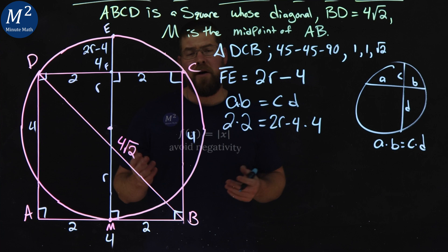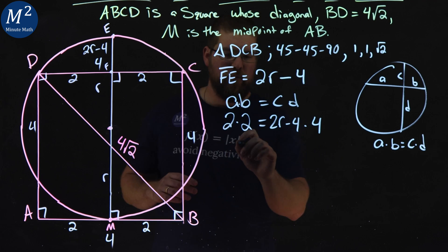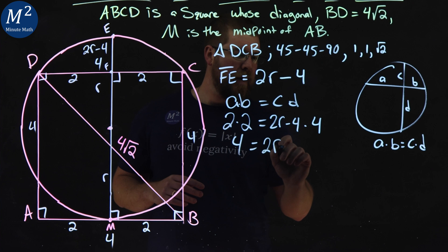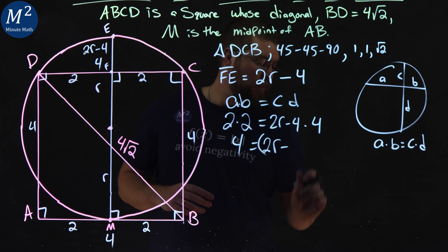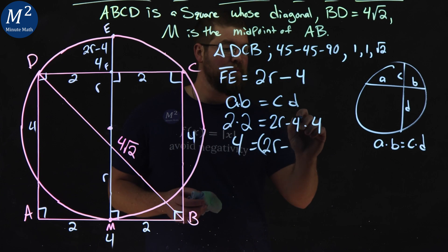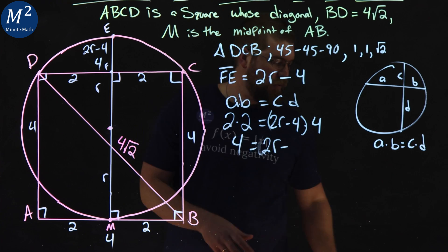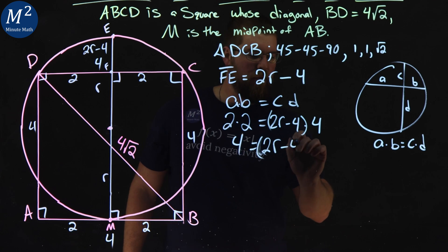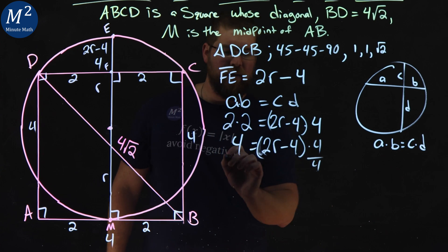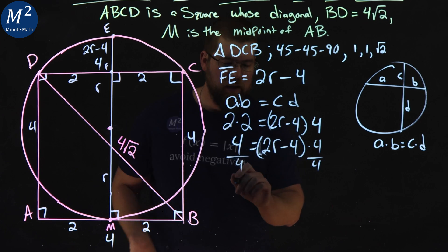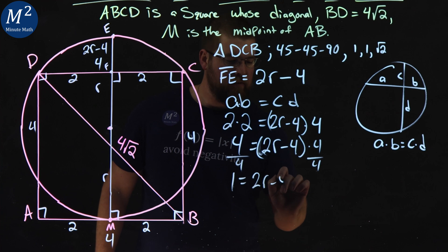From there we want to solve for R. That's what we're looking for. We got 4 here equals 2R minus, oh, multiply that out here. I almost forgot to distribute. Sean, don't forget to distribute. Here actually, I'm not going to. You guys ready? Watch this. 4, we have times 4 here. Let's divide both sides by 4. Why would I do that? Don't distribute, divide. 1 equals 2R minus 4. Add 4 to both sides.